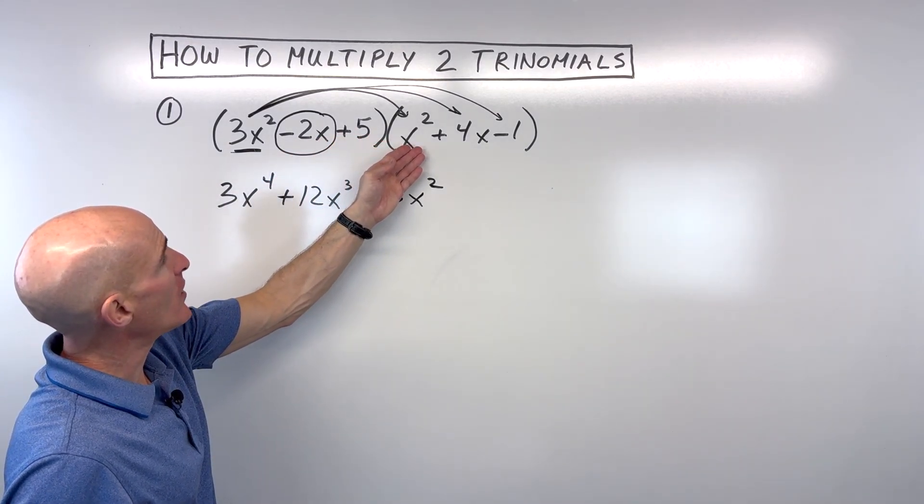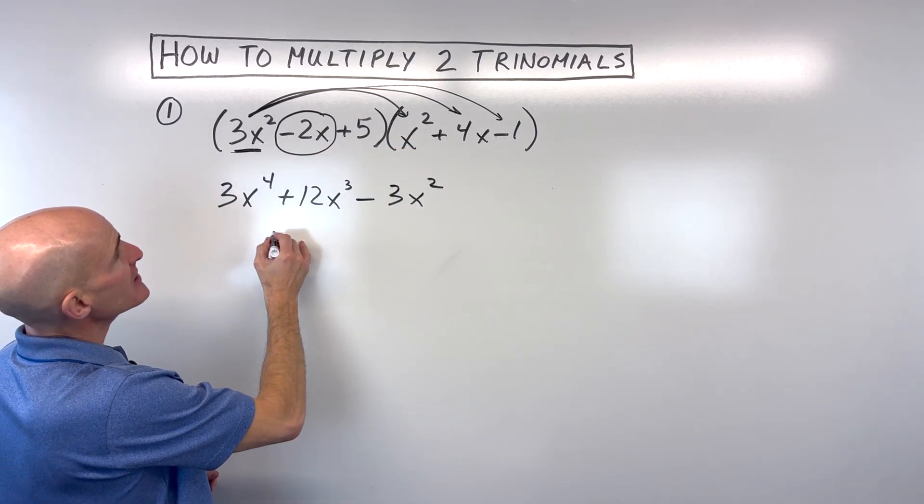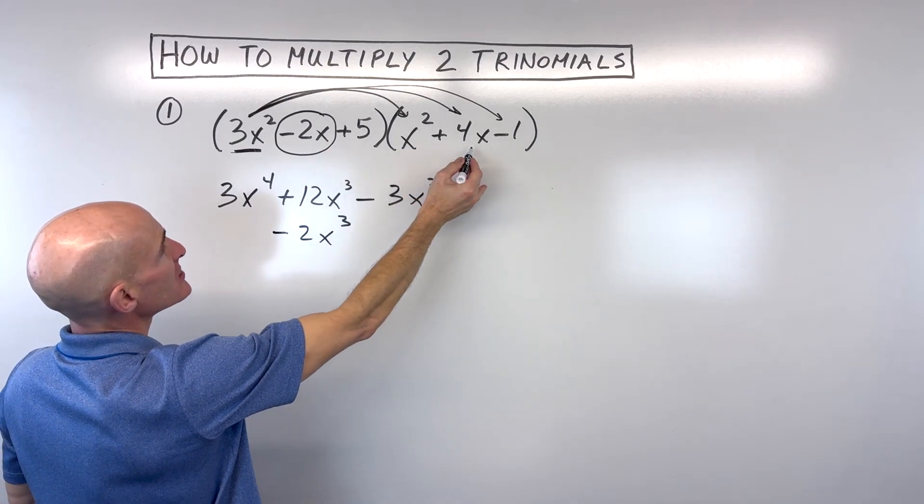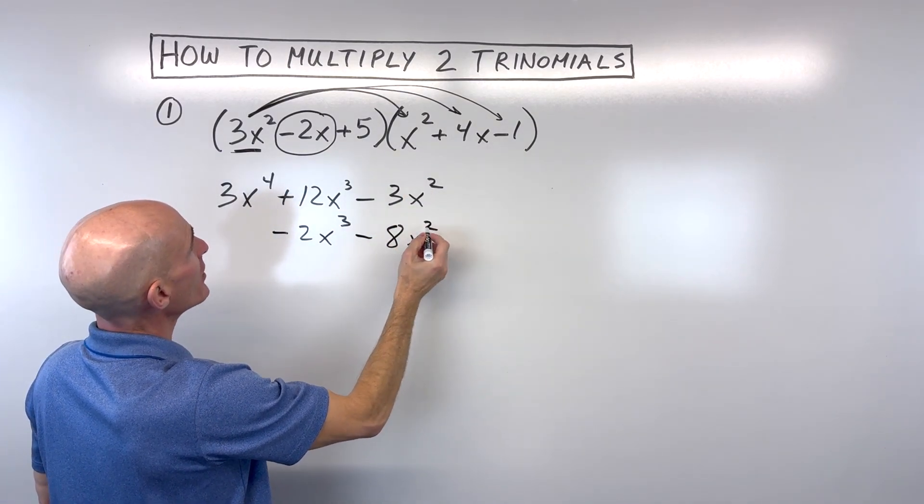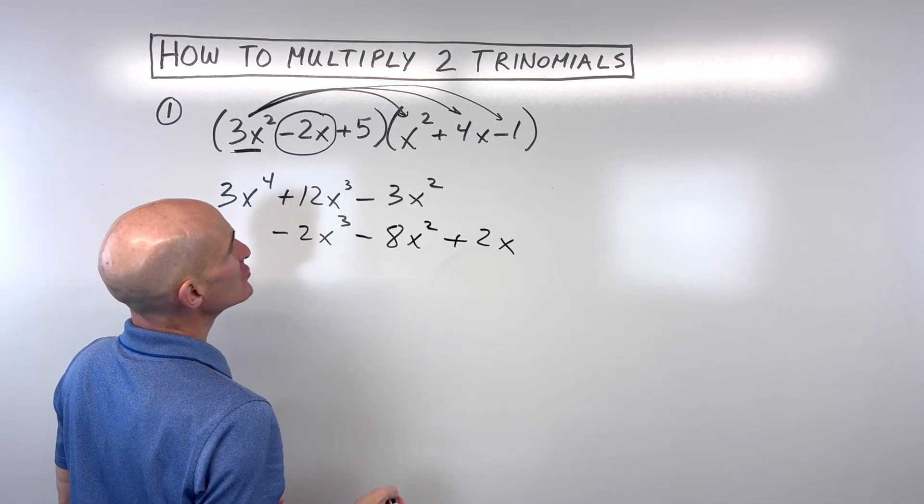So now we're going to distribute negative 2x to all three terms. Negative 2x times x squared is negative 2x cubed. Negative 2x times 4x is negative 8x squared. Negative 2x times negative 1 is positive 2x.